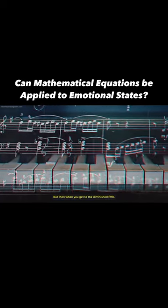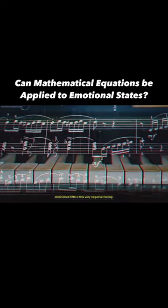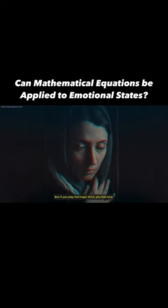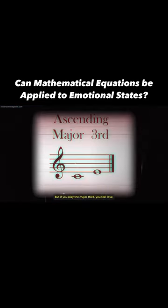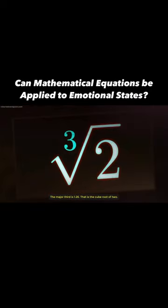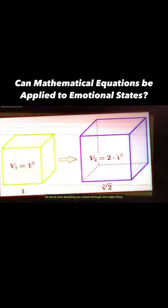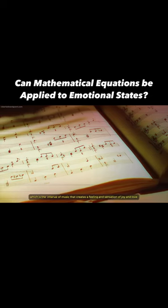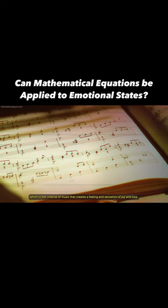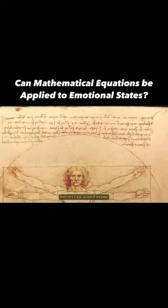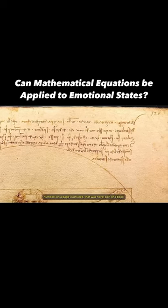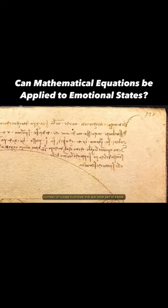But when you get to the diminished fifth, it's this very negative feeling—it makes you scared. But if you play the major third, you feel love. The major third is 1.26, which is the cube root of 2—that's the doubling of the cube. So we're now doubling our octave through the major third, which is the interval of music that creates a feeling and sensation of joy and love. And there it was, as one of the page numbers on a page illustrated that was never part of a book.